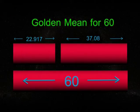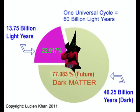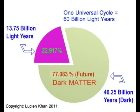The golden mean for 60 is 37.08 plus 22.917. But remember 22.917% of 60 is also 13.75. There is an underlying perfection here.